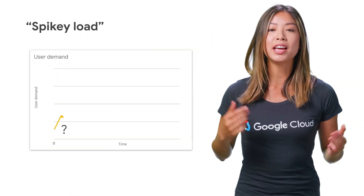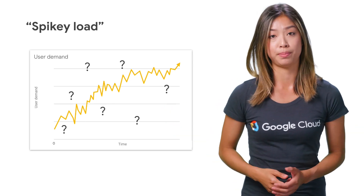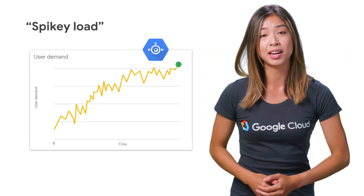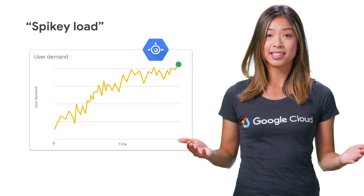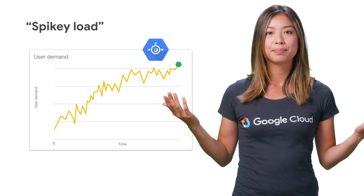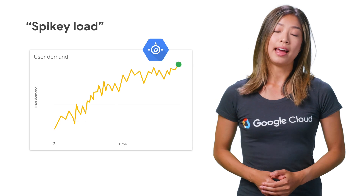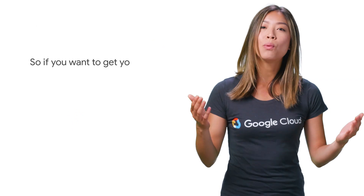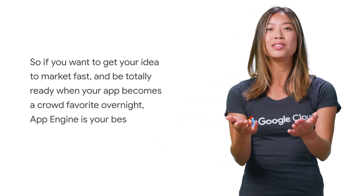When you think of App Engine, think fast autoscaling. Let's say you're running a brand new app and you don't know how demand is going to fluctuate over the long term. Or maybe you have a spiky load where usage jumps up really high for short periods of time, like an advertising landing page. Having consistent access to a fixed capacity doesn't really make sense. With App Engine, you pay for the cycle so you don't have to guess. And no matter how quickly users adopt, App Engine always keeps up. So if you want to get your idea to market fast and be totally ready when your app becomes a crowd favorite overnight, App Engine is your best bet.